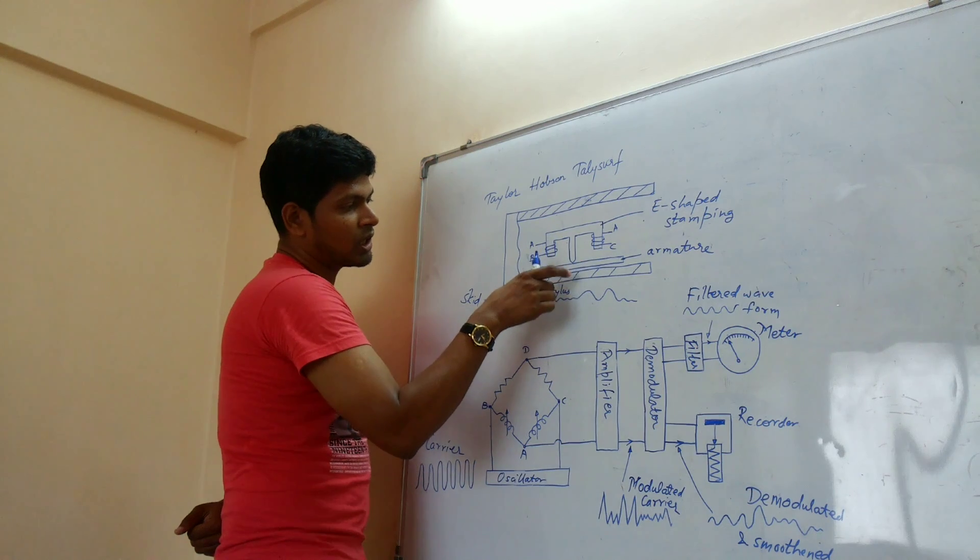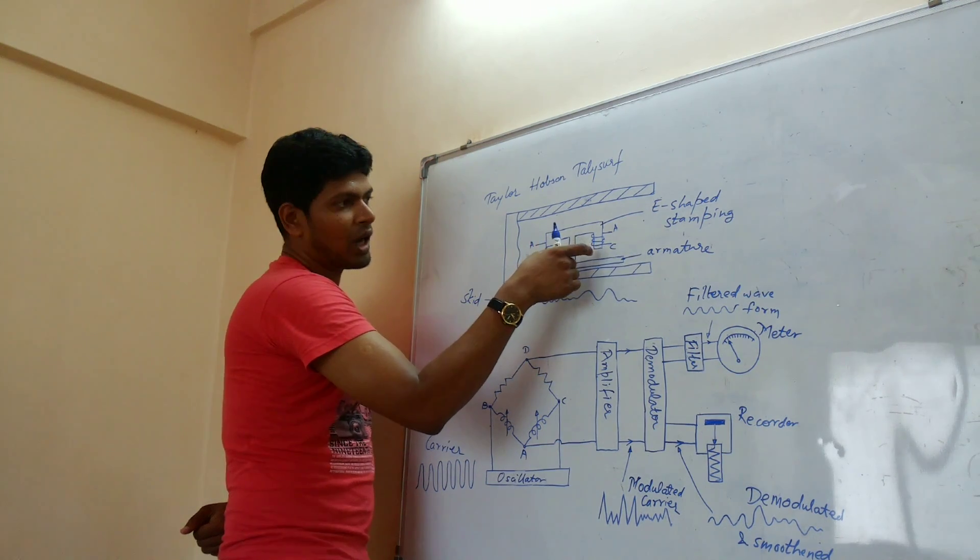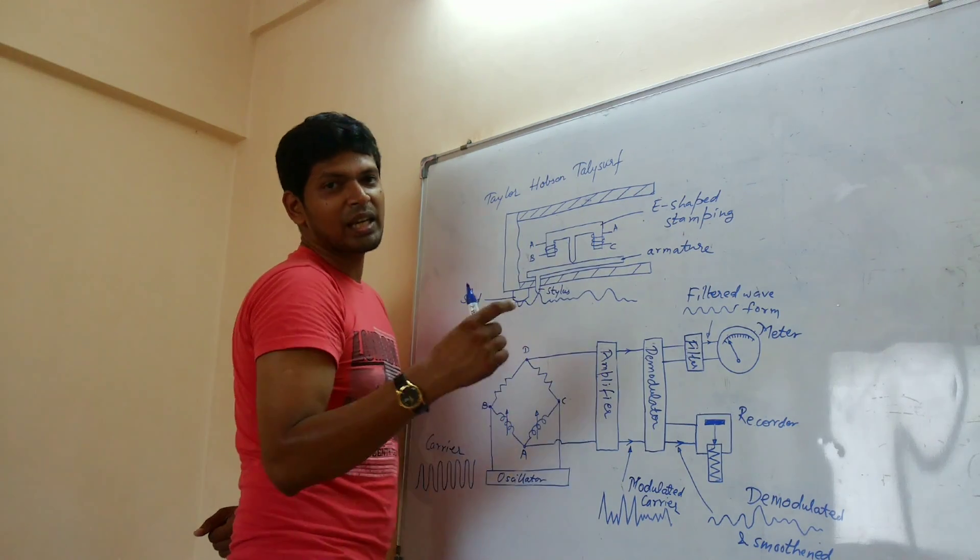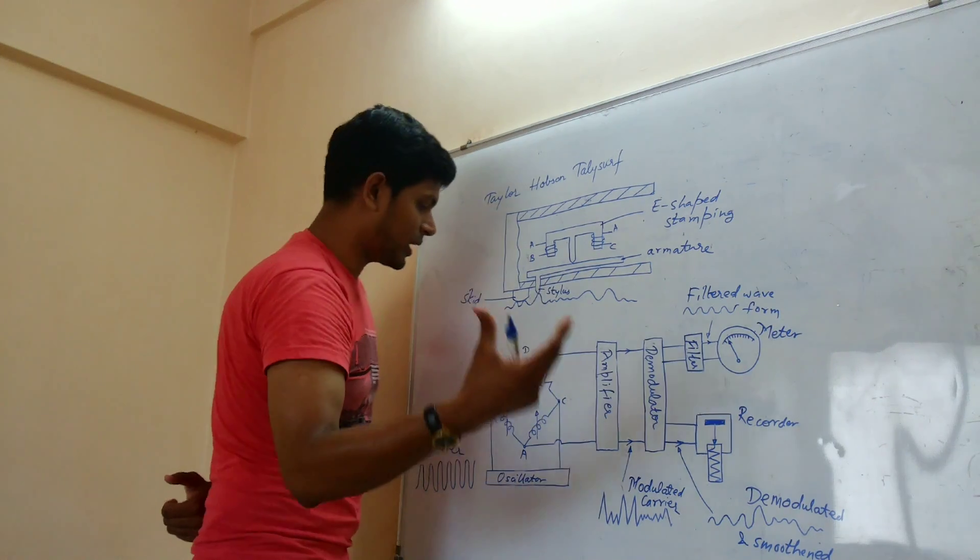And when the stylus moves, the gap between the armature and the E-stamping on either of the side gets changed or varied. That's why the AC current also gets changed or varied.